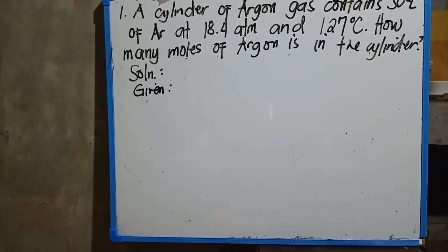Let's have an example for ideal gas law so that we will understand more. Our first example: a cylinder of argon gas contains 50 liter of Ar at 18.4 atm and 127°C.